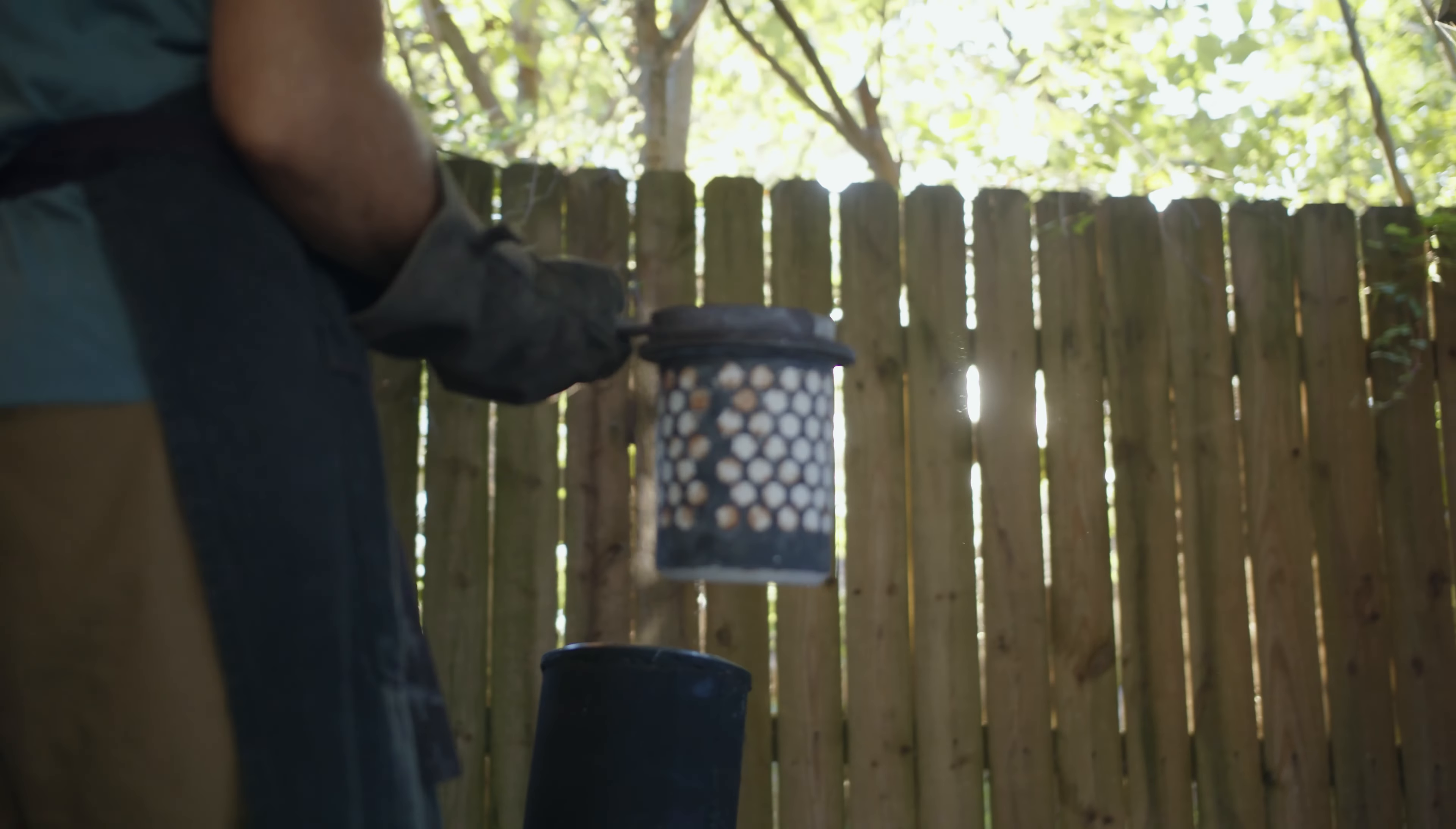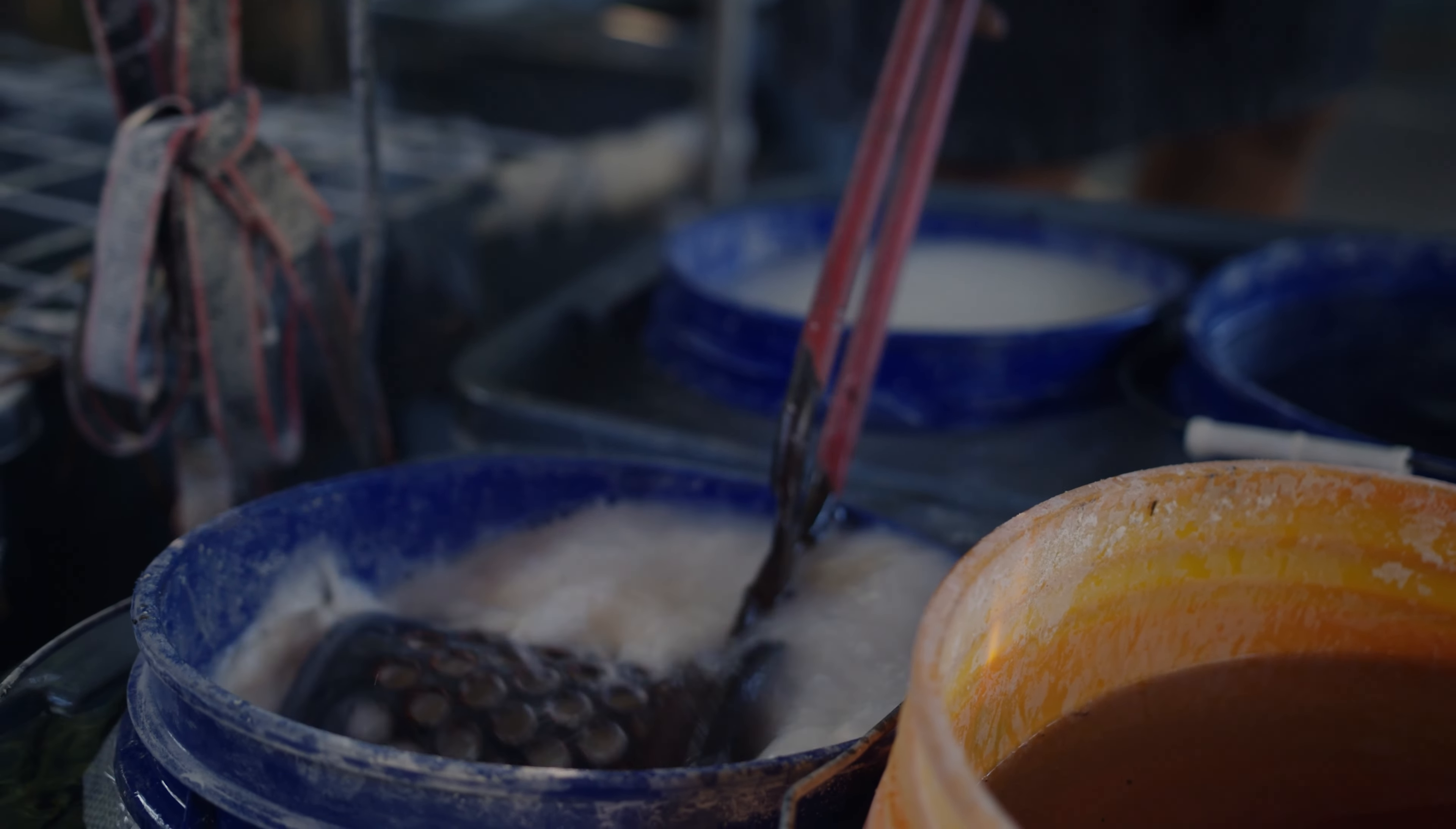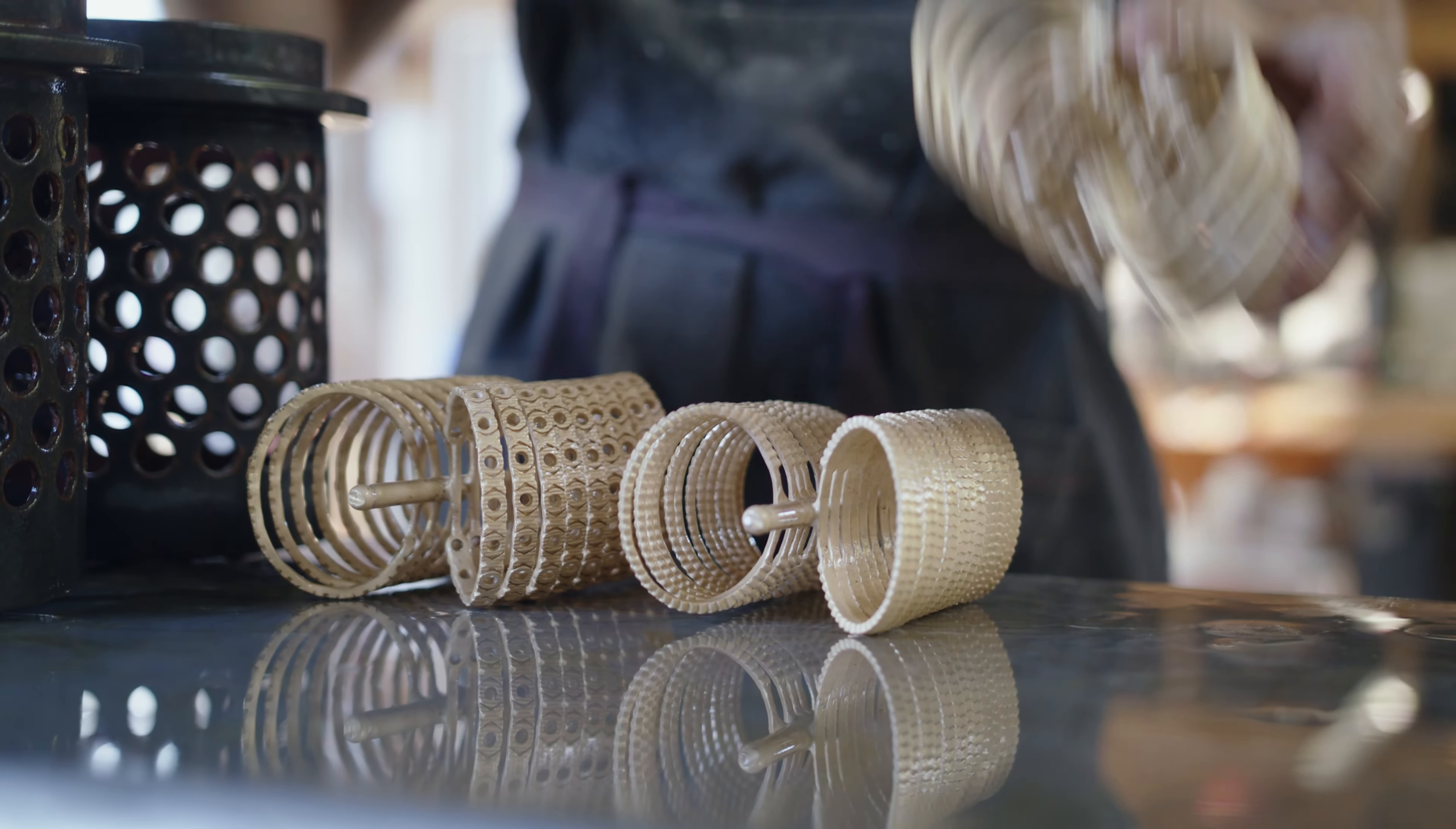Once the molten metal cools and hardens, the mold is dunked into water to help dissolve the investment. This reveals a metal version of the once waxed tree. The jewelry is finally in metal form.